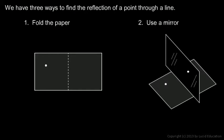Next I'll mention three ways that we can think about the reflection of a point through a line. One is you can imagine folding a piece of paper. The line that we're going to reflect across is going to be the fold.